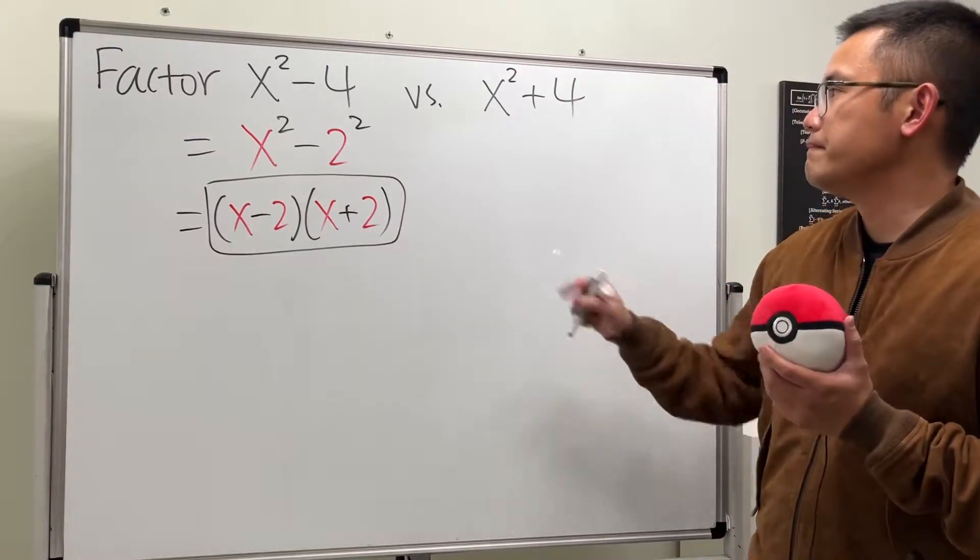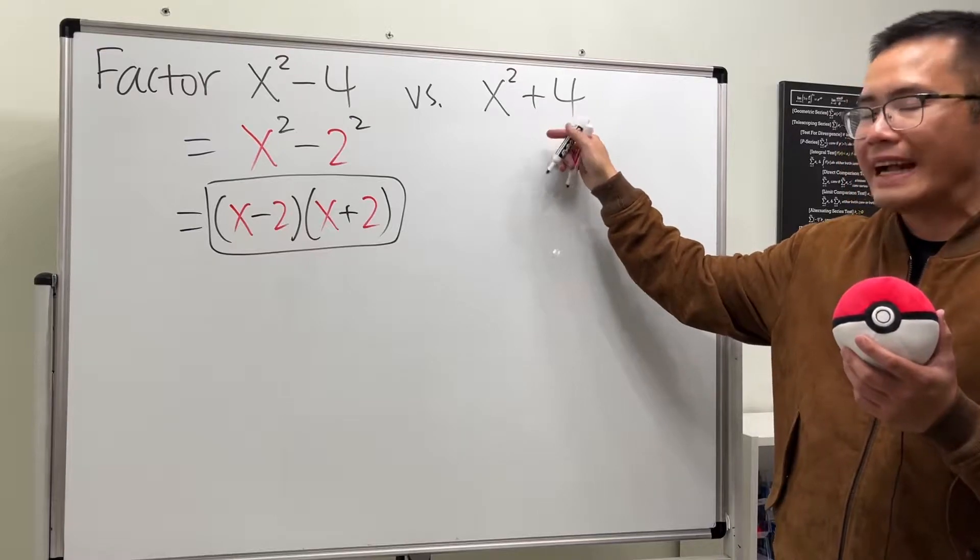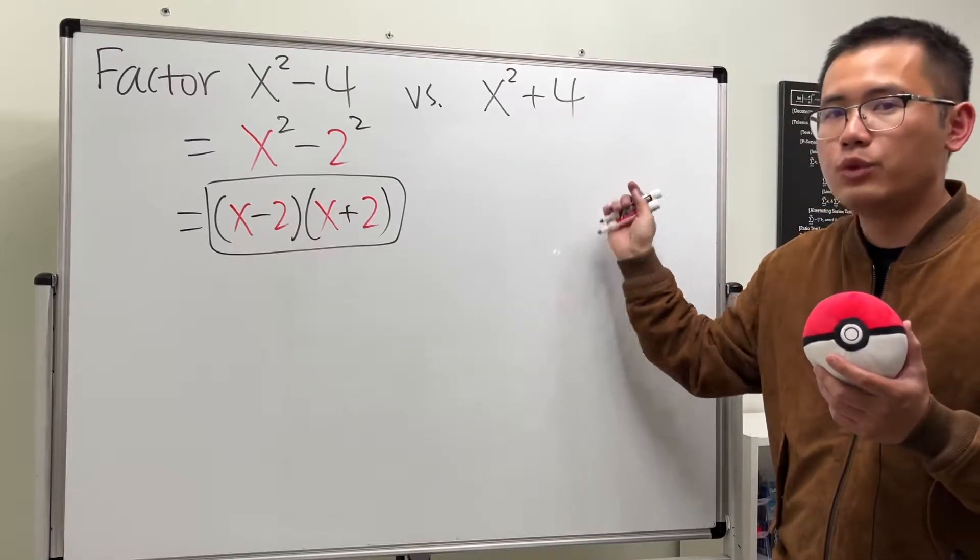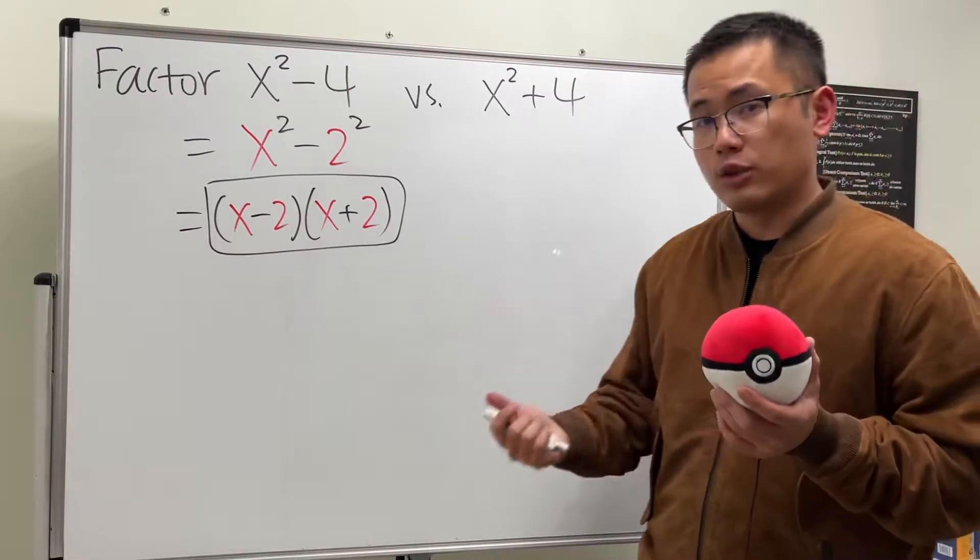However, for the second one, yeah, this is a sum of two squares. We cannot factor it in the real world, but if you use complex numbers, it's actually okay. So it really depends on what kind of tools that you have.